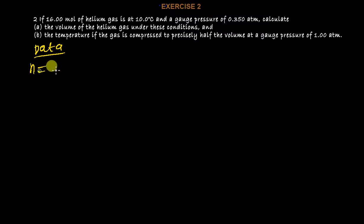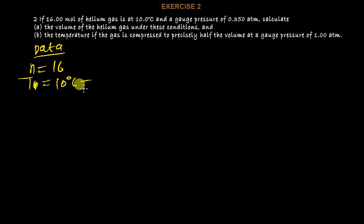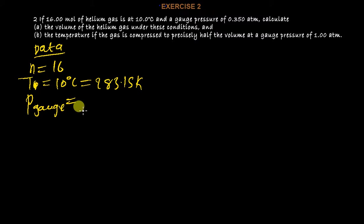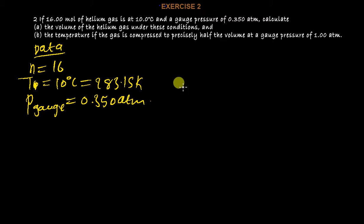What we've been given: n equals 16 moles. The initial temperature T is 10 degrees Celsius, which is the same as 283.15 Kelvin. The pressure given is a gauge pressure: P_gauge equals 0.350 atm. Before I explain, let me first try the formula.